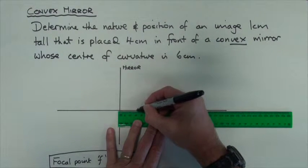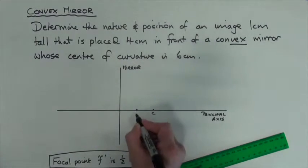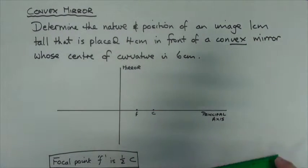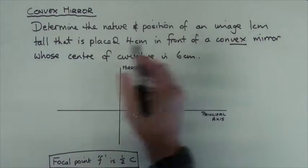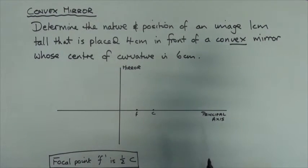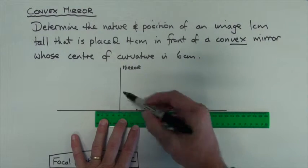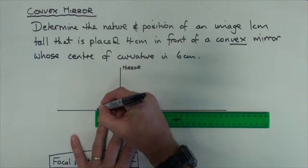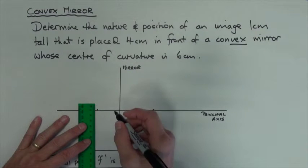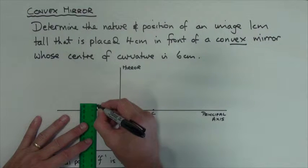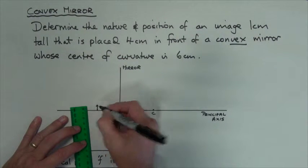So I'll put my point at three centimeters and label that F. Now what we'll do is then add the object one centimeter tall, four centimeters in front of the mirror. So this is the front side. So there's my four centimeters, and it's one centimeter tall, and I'm going to label the arrow object.